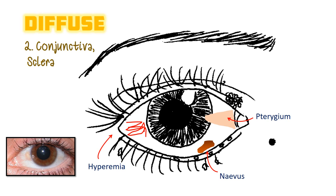Then look at the bulbar conjunctiva and sclera, still using a diffuse beam. Things to look out for would be hyperemia, nevus, pterygium, pinguiculae. Complete lid eversion is usually only done on indication — for example, if the patient comes in with a red eye or you're suspecting papilla or follicles, or a patient with giant papillary conjunctivitis.